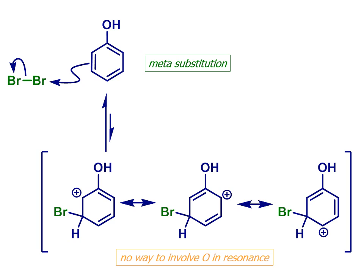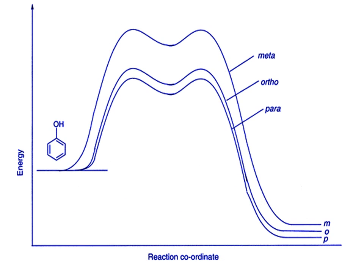So reaction at the meta position proceeds via a higher energy intermediate. Looking at a reaction profile diagram, this means that we have a lower energy pathway to the ortho and para-substituted products, i.e. lower activation energies for reaction at those positions than we do at the meta position.